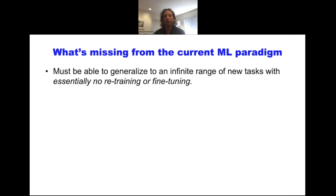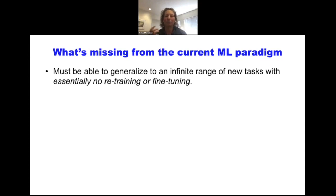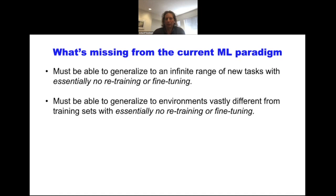We have these two challenges. Common sense requires being able to generalize to an infinite range of new tasks with essentially no retraining or fine-tuning. Good progress is being made on meta-learning, but in a sense of human common sense, there almost is no task — and to the extent there are tasks, they're tasks we make up for ourselves, and that's part of the common sense. It also requires being able to generalize to environments that are vastly different from the training set, again with essentially no retraining or fine-tuning.